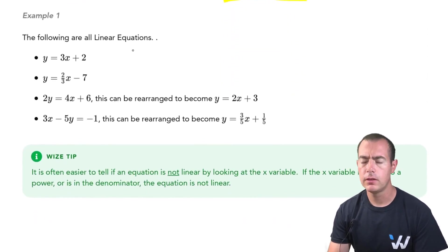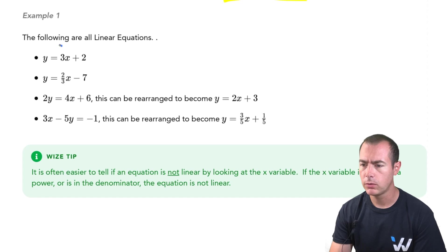All of these equations that I have here happen to be linear equations and we can see that they definitely fit the form. In this first one here, the 3 would be like our value of a and the 2 would be the value of b, so it fits that y equals ax plus b form. Next one, same thing. The a would be the two thirds and the b would be that negative 7.